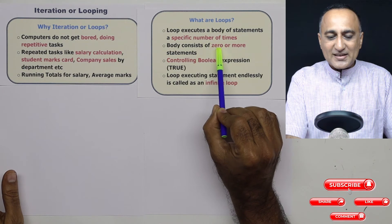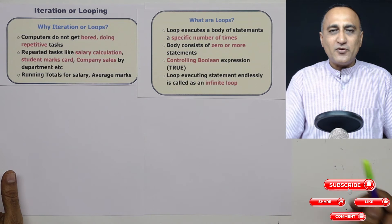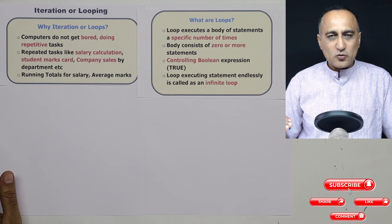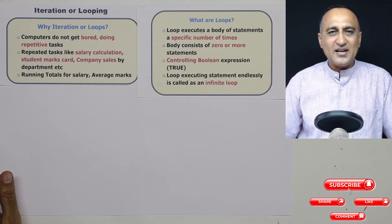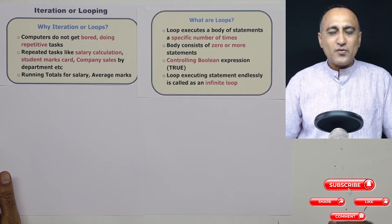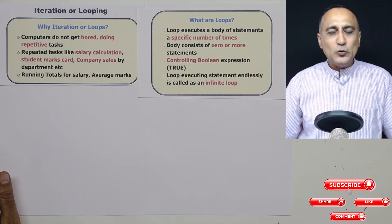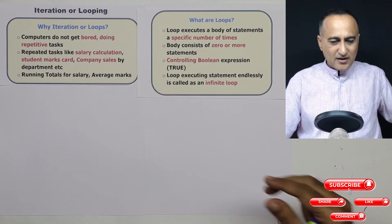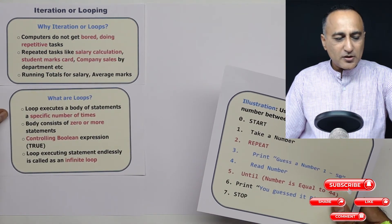The body of a loop consists of zero or more statements and it is controlled by means of a Boolean expression. Most of the times, as long as the Boolean expression is true, I am going to continue to execute those body of instructions again and again, till the Boolean expression becomes false. In one other case, if I'm using the repeat until loop, I may execute the body of the loop as long as the condition is false.